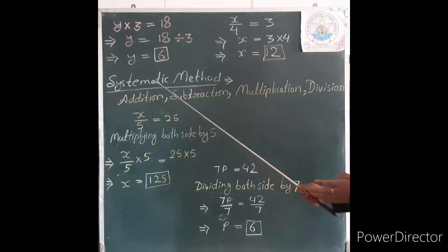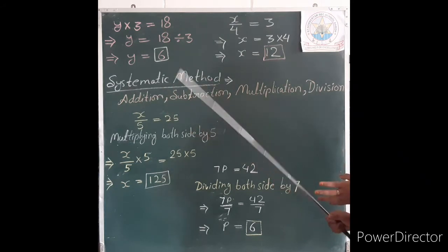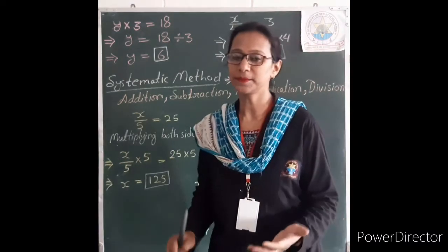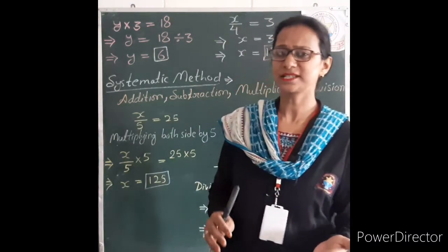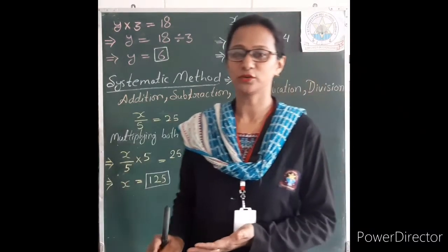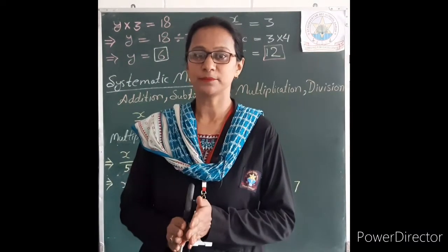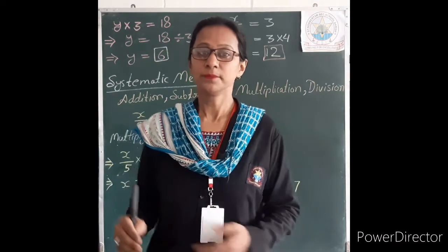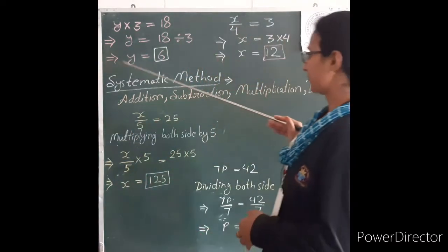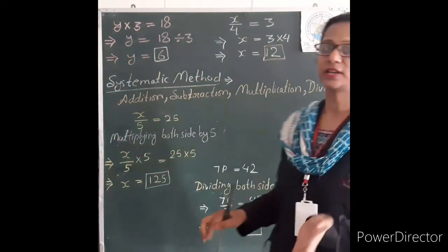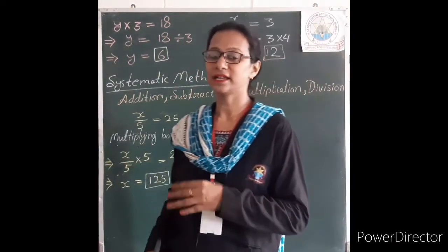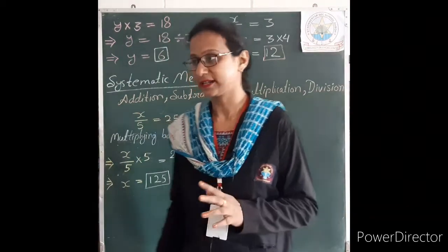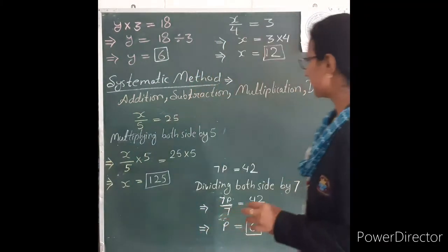Now there is another method — the systematic method. In the systematic method, instead of transposing, we apply the same operation to both sides. This means both the left-hand side and the right-hand side either add, subtract, multiply, or divide by the same number.